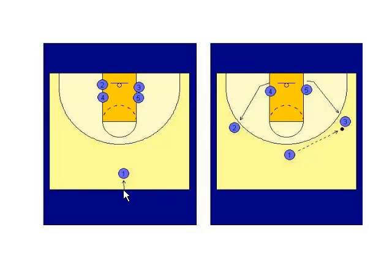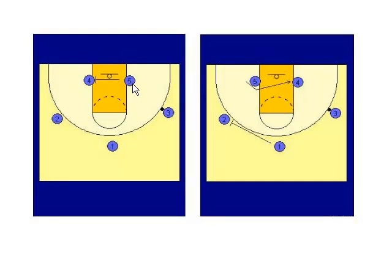Player 1 brings the ball up the court, while players 2 through 5 line up as shown on the box. As player 1 approaches the top of the key, players 2 and 3 use 4 and 5 as picks and move to the 3-point line at these spots. Player 1 can now pass to either player, but in this example the ball goes to 3, who looks for a quick inside pass into player 5. If the pass isn't there, player 5 sets a pick against 4's defender. Player 4 uses the pick, cuts across the paint, and looks for a pass from 3.